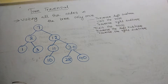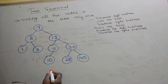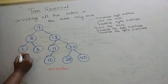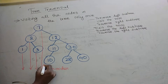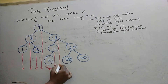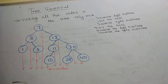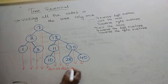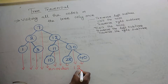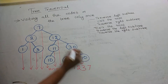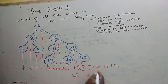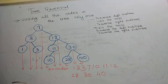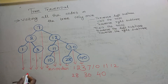Now we are going to do the inorder, preorder, and postorder traversal of this tree. I am going to explain how to find out the inorder using an easy method. In the inorder, we draw the tree and write the vertices. The inorder traversal gives: 1, 2, 3, 7, 10, 28, 30, 40. This is the easy way to find out the inorder traversal.